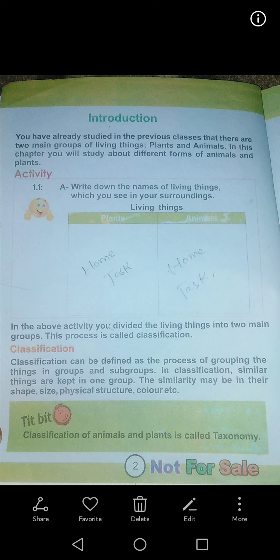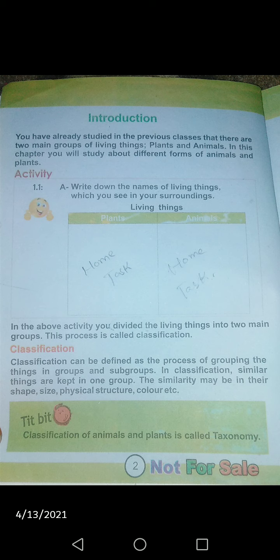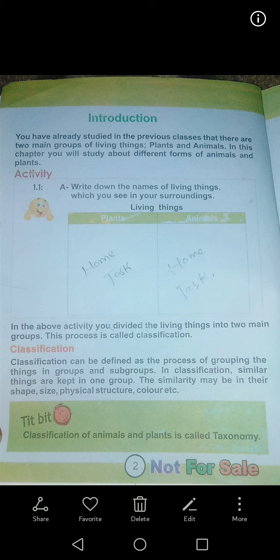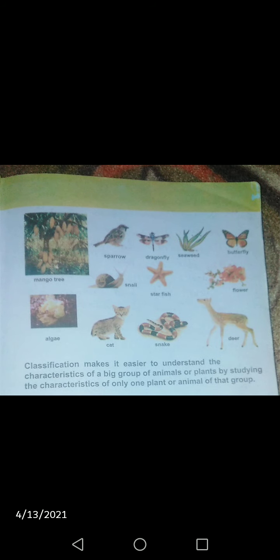All fish have the same way of living — they are water-dwelling. Their physical structure is the same; they all have a backbone, they all have fins and no legs like a goat. Size may differ but they are still fish. Color is also considered. If at least one or two characters match, they are placed in the same group. This is classification, and these are the examples in your book.